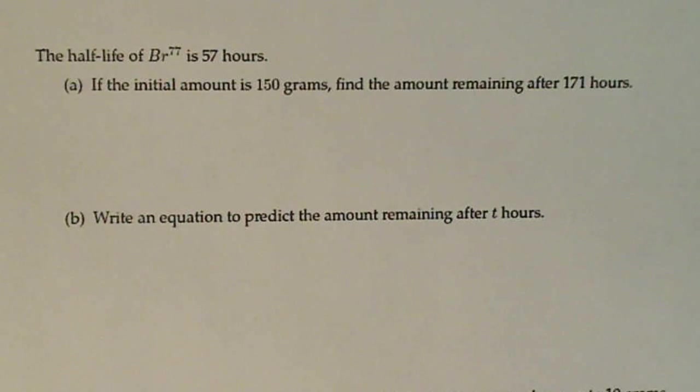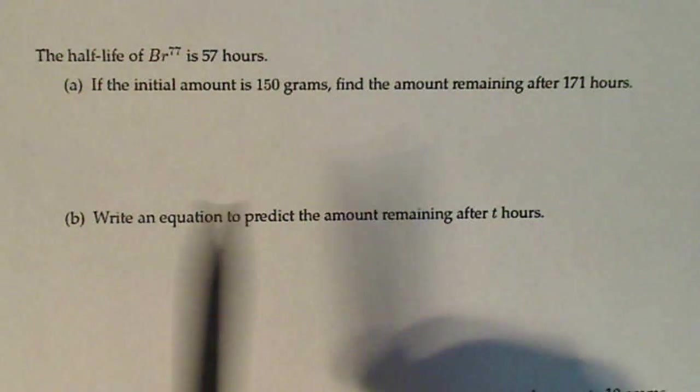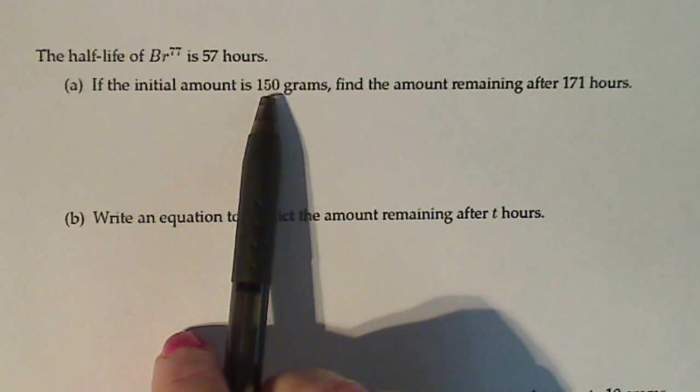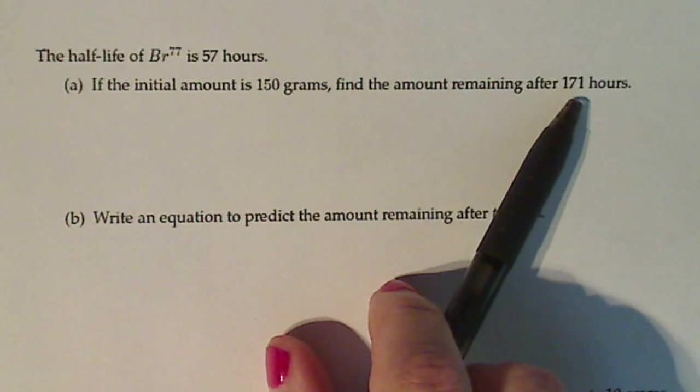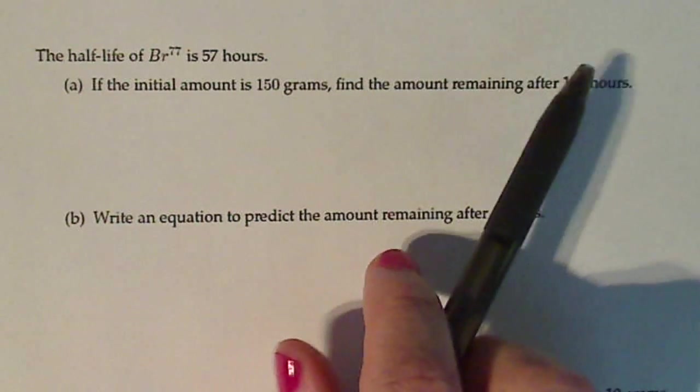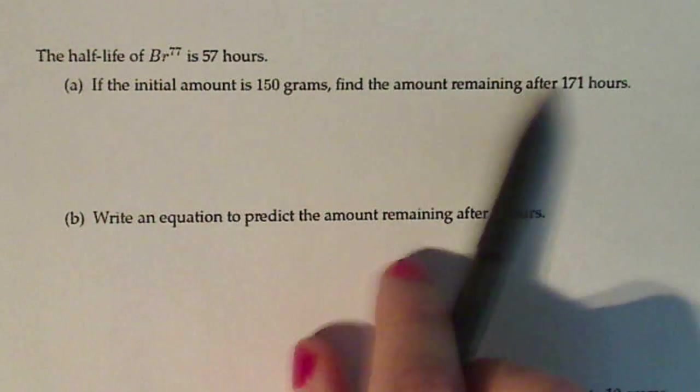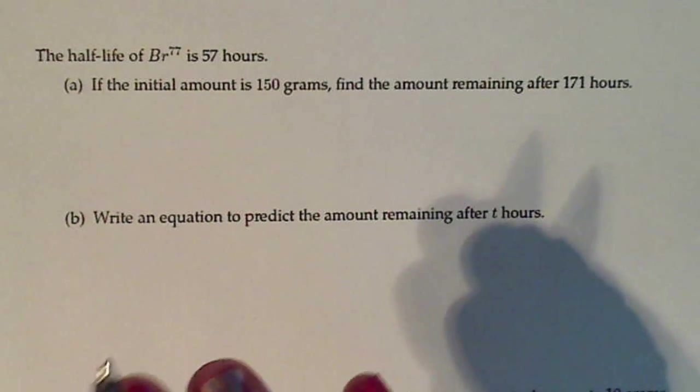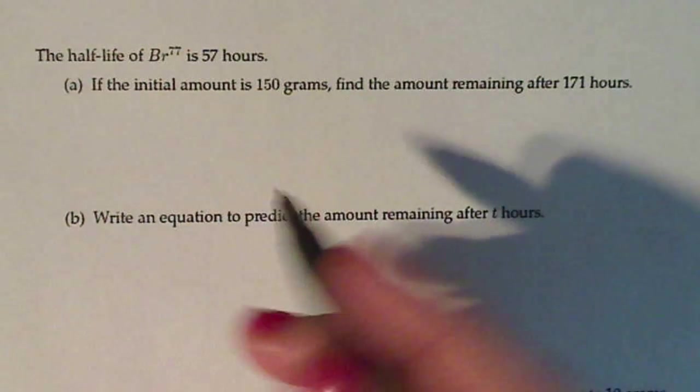The half-life of Br-77 is 57 hours. If the initial amount is 150 grams, find the amount remaining after 171 hours. Now, 171 can be divided evenly by 57, so this one can be very quickly calculated using a chart.